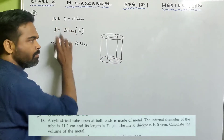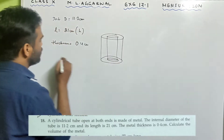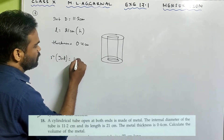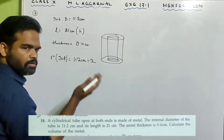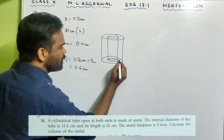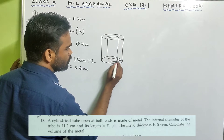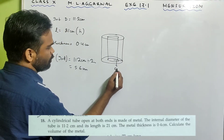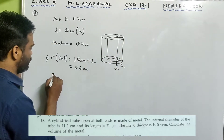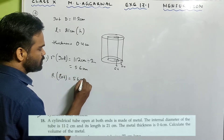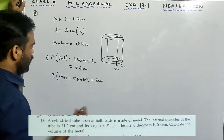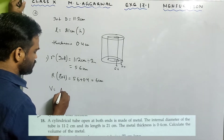The internal diameter is given, so the internal radius, represented by small r, is 11.2 divided by 2 — that's 5.6 centimeter. The thickness is 0.4. So the external radius, capital R, will be 5.6 plus 0.4, that's 6 centimeter.